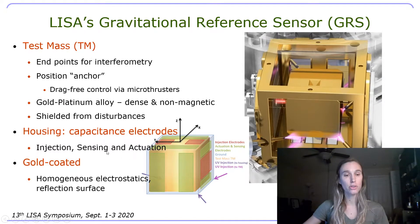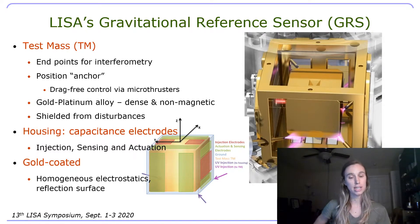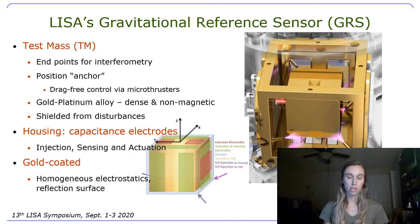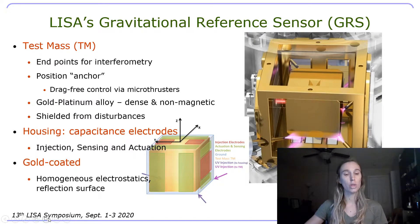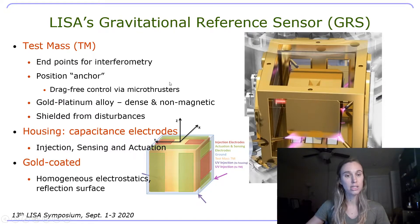These electrodes are used for injection, sensing, and actuation of the test mass — injecting voltages, sensing its position, and moving the test mass if need be. Everything is coated in gold, which is for its homogeneous electrostatics properties, as well as a nice and even reflection surface.